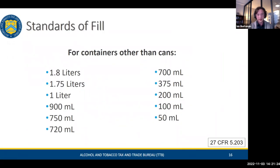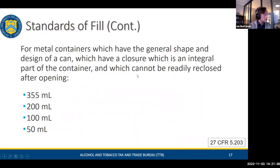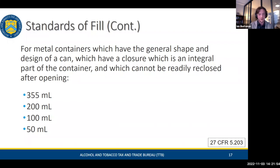The container size list covers bottles, cans, and other containers. Cans have a specific definition: a general shape and design with the closure as an integral part of the container, which cannot be readily reclosed after opening — like a pop-top beer or soda can. Can sizes permitted are 355 mL, 200 mL, 100 mL, and 50 mL.